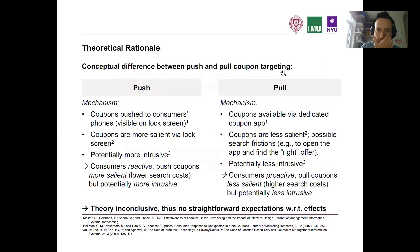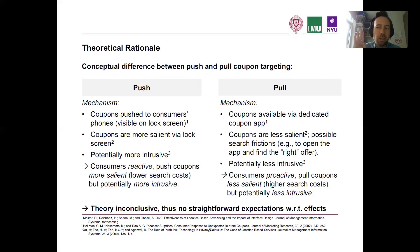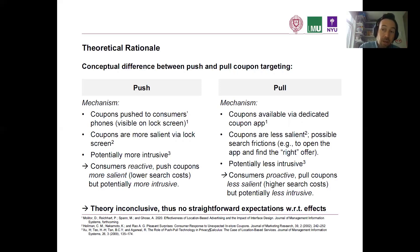Conceptually, we differentiate between two mechanisms. When it comes to push, the coupon is visible on the lock screen, which means push coupons are more salient by their appearance. But at the same time, we know from prior literature that they are more intrusive — you might question why you got that coupon at that moment, and in general people don't like to be tracked. So we have this underlying trade-off: consumers are reactive, push coupons have inherently lower search costs, but they are also more intrusive.